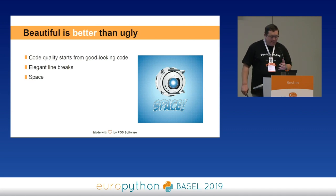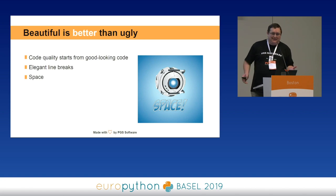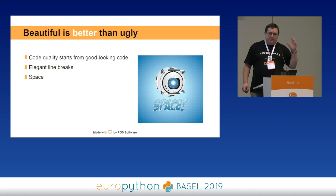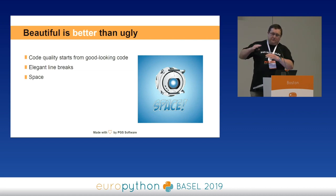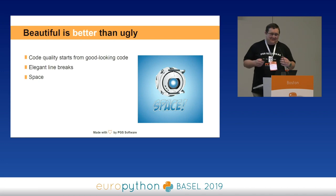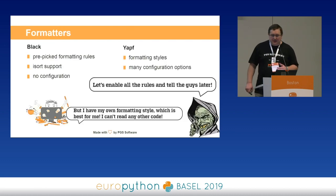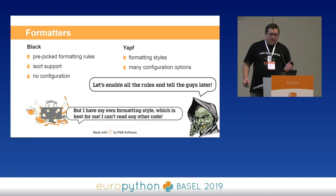Let's start with 'beautiful is better than ugly.' What does it mean? It can mean lots of things. There's something in our mind — our mind does a couple of tricks. For example, beautiful people seem to be more honest, more good. And the same is with code. If you look at code and it looks beautiful — it has lots of space, beautiful line breaks, and it's well divided — you have a feeling that it's well written. It's not always true, but it's good to have a good first impression. And to have a good first impression, we can use formatters.